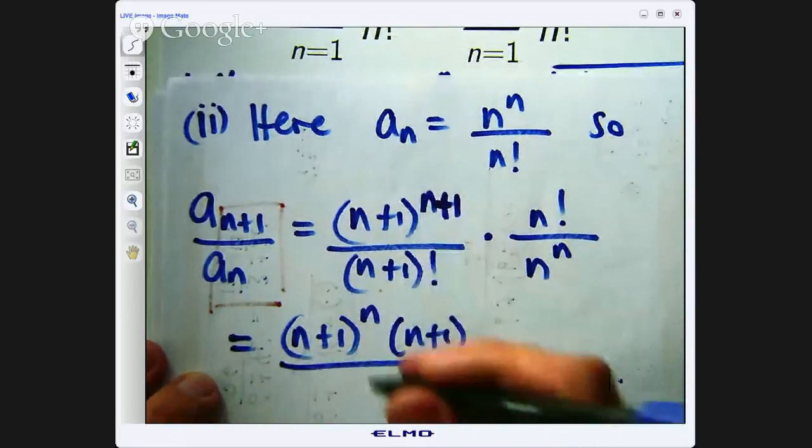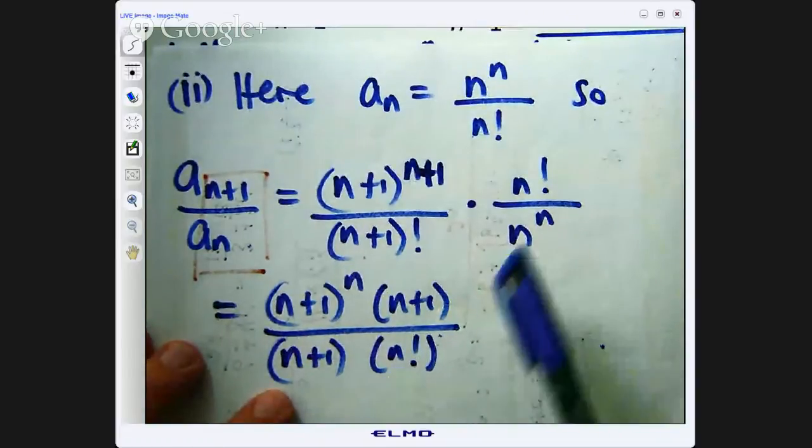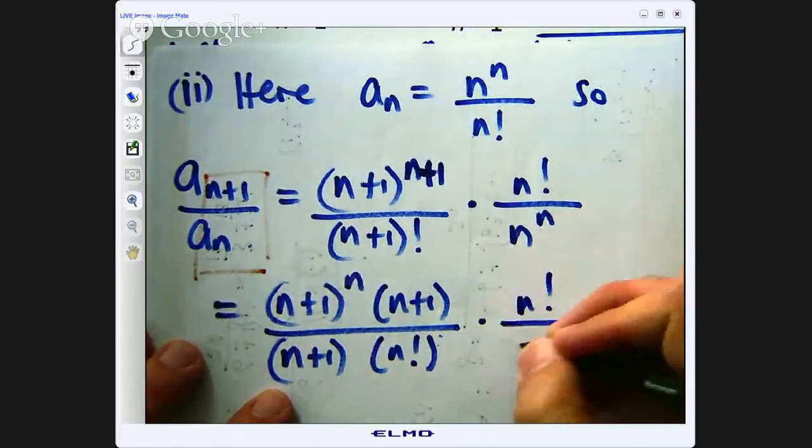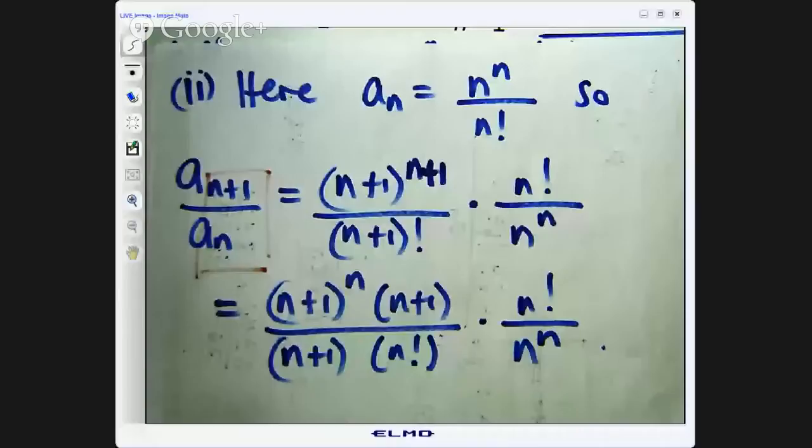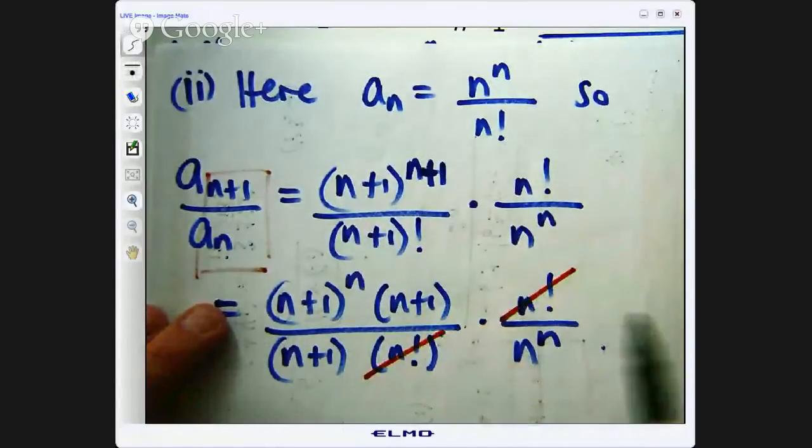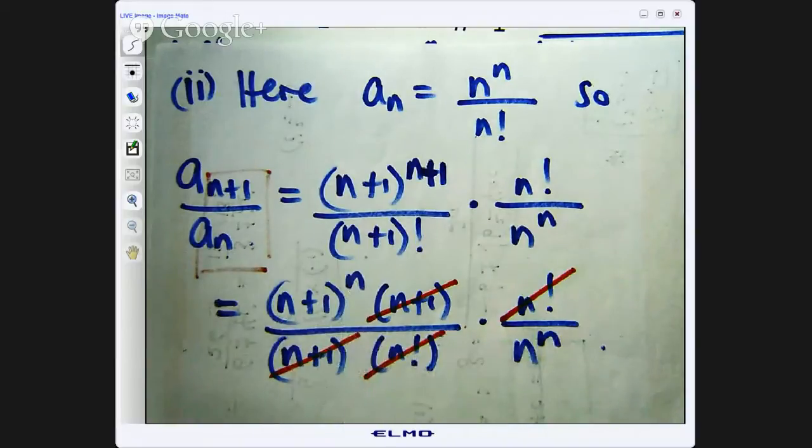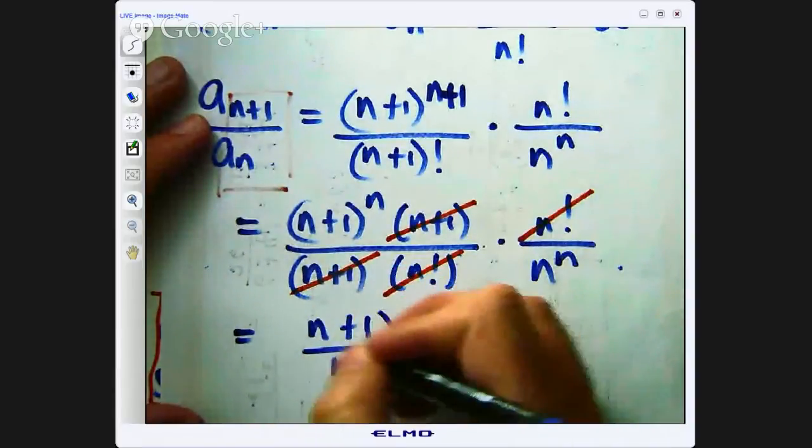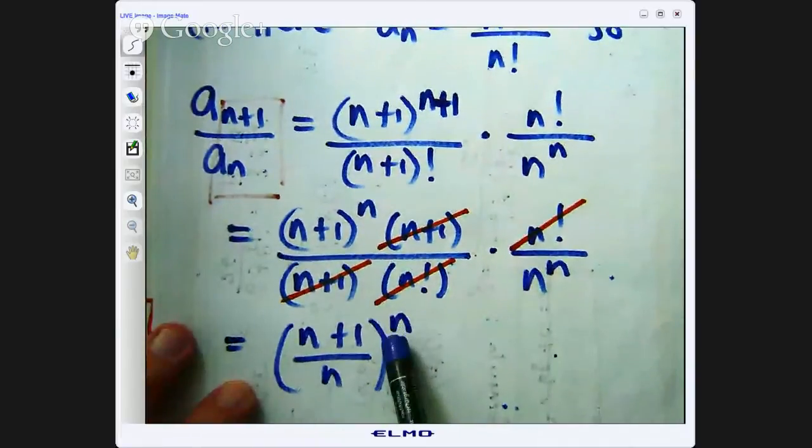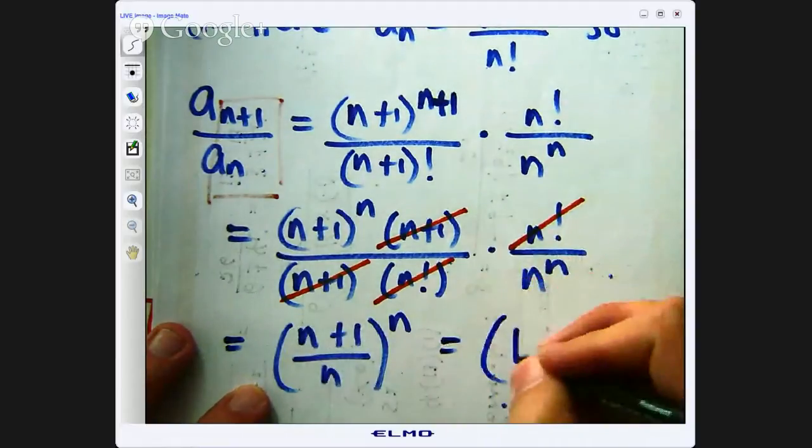So what happens now? Well, it's just a matter of doing what we did before. Let's simplify our ratio as much as we can, and then we'll take the limit and see what the limiting value is. So firstly, I can write this as the following. It's n plus 1 to the n, just by splitting up the power, times n plus 1. Now, down here, I can use the factorial property that I did in the first question. And over here, I've got this n factorial and n to the n. So let's look for cancellation now.